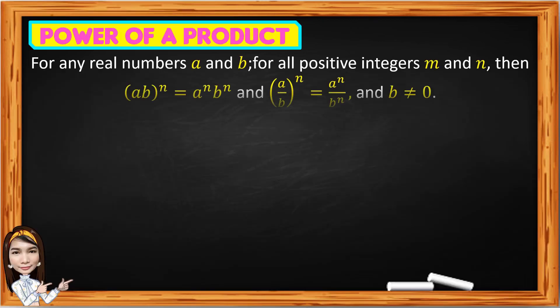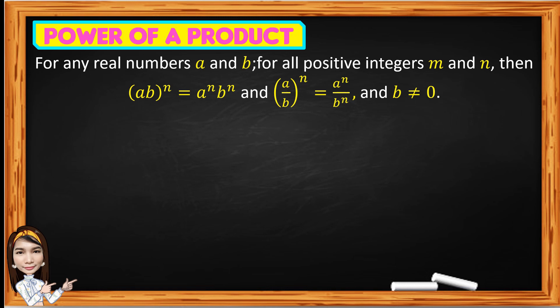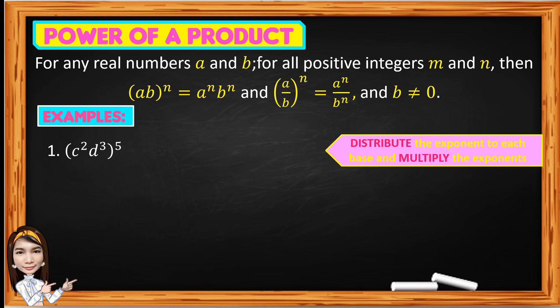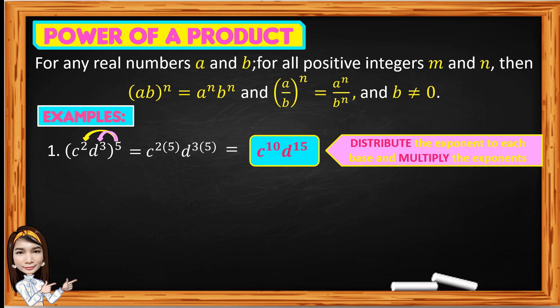Next, we have the power of a product rule. For any real numbers a and b and all positive integers n: the quantity ab to the power of n equals a to the n times b to the n. Also, the quantity a over b to the power of n equals a to the n over b to the n, where b is not equal to 0. We distribute the exponent n to each base. Example 1: the quantity of c squared d cubed, raised to the 5th — distribute 5 to each base: copy base c, multiply exponent 2 times 5; copy base d, multiply exponent 3 times 5. We get c to the 10th times d to the 15th.